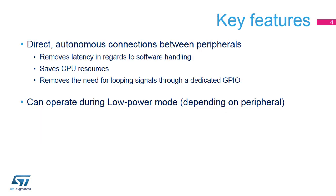The Interconnect Matrix offers two features. First, it ensures direct and autonomous connections between peripherals, allowing removal of latency in regards to software handling, thus saving GPIO and CPU resources. Second, the interconnection between certain peripherals can even operate during low-power modes.